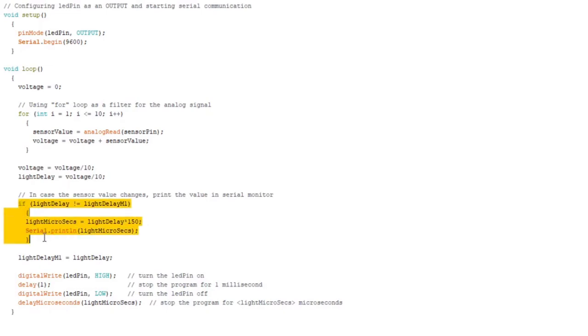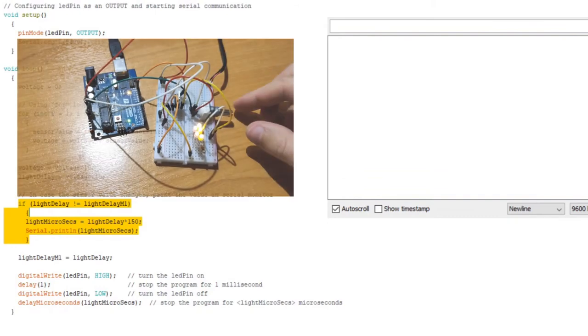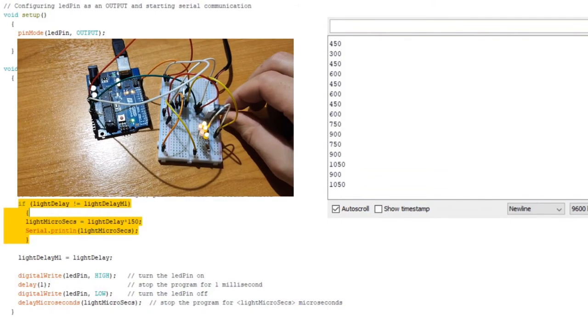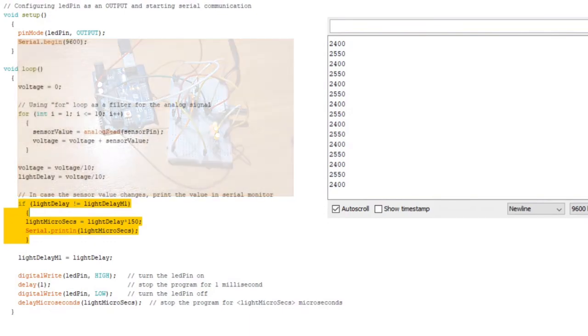And now we get to this if statement. And basically what this if statement does, in case the light delay value is changed it outputs the new light delay value in the serial monitor. As you can see it here right now. I would say that the only purpose for this if statement is debugging, just to check if everything works properly.